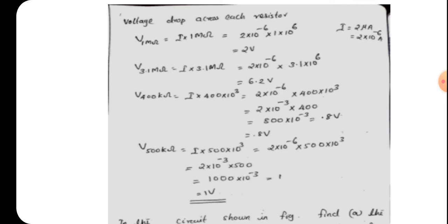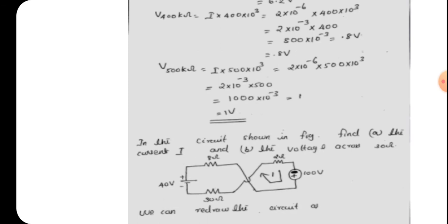Voltage drop across 400 kilo-ohm is 2 micro-ampere into 400×10³ ohm, which equals 0.8 volt. Voltage drop across 500 kilo-ohm is 2×10⁻⁶ into 500×10³, which equals 1 volt. This completes the solution — we have found the current and voltage across each and every resistor.